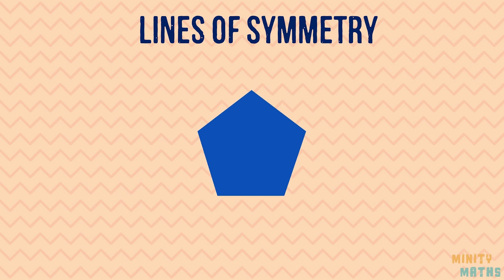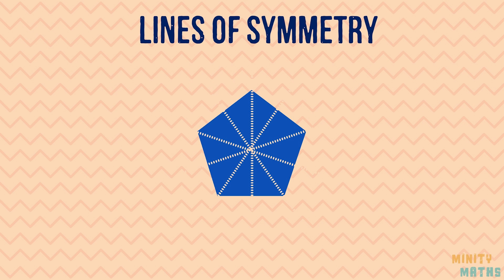So, can we have more than one line of symmetry per shape? The answer is yes. Some shapes have more than one line of symmetry. If a shape has one or more lines of symmetry, then it is a symmetrical shape. If there are no lines of symmetry, it is an asymmetrical shape.